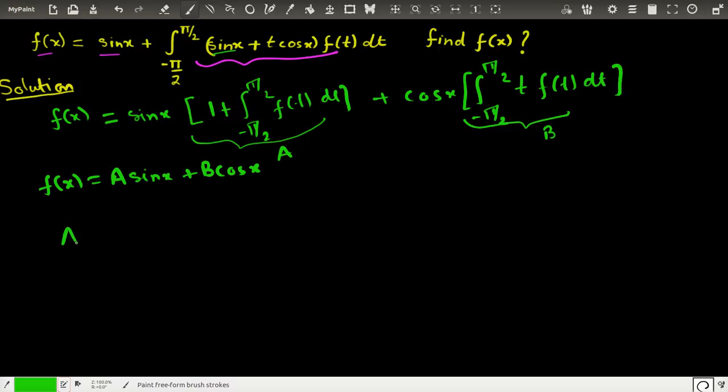Now with this definition we can go and find the value of this. What is A? A is nothing but A is 1 plus minus π/2 to plus π/2, f(t). Now f(t) I can write as A sin(t) plus this will be B cos(t) dt, because now I am using the definition of the function to start the question.